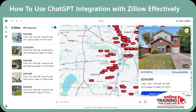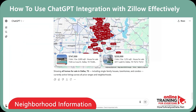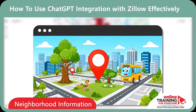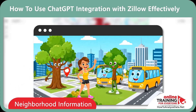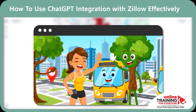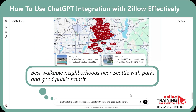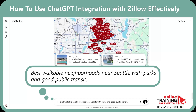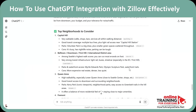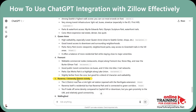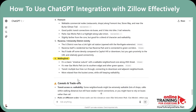Sometimes you don't search for a specific house, but you search based on the neighborhood — you might look at walkability, parks, and transit. Let me show you how to research areas using natural language. I'll request walkable Seattle neighborhoods near parks with good transit, and you get the full list in seconds: Capitol Hill, Belltown, Downtown, First Hill, International District, Queen Anne, Fremont, Ravenna, University District, and Ballard.